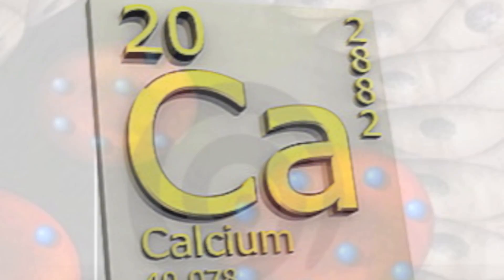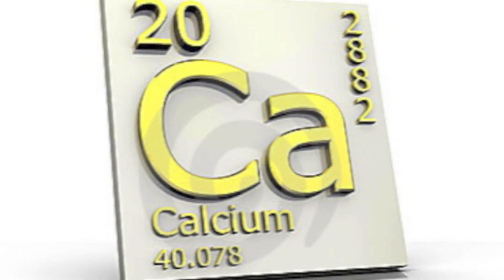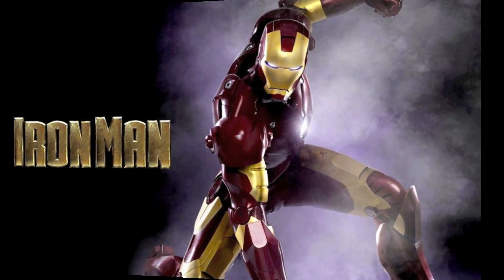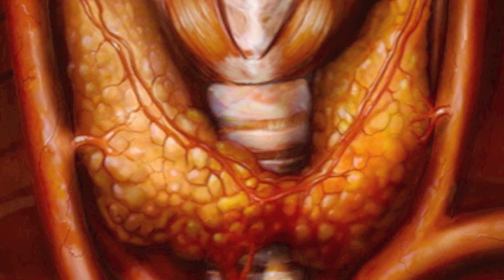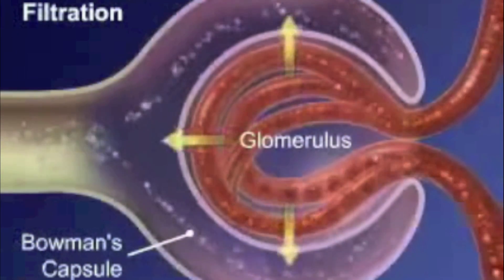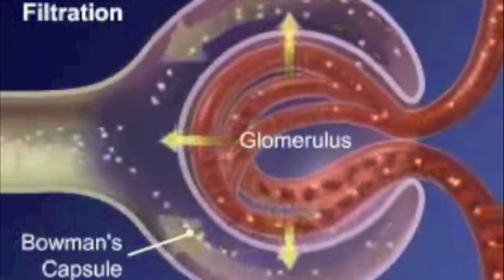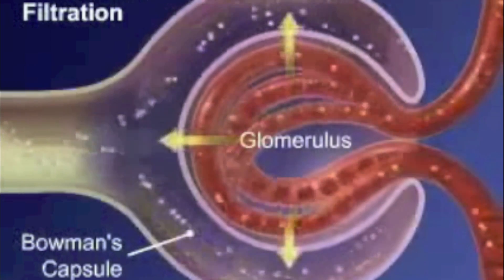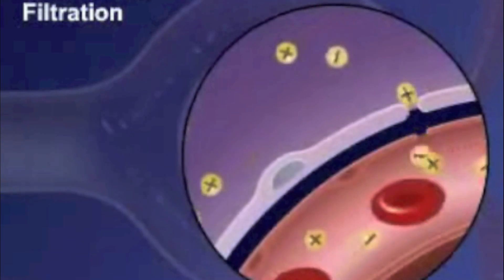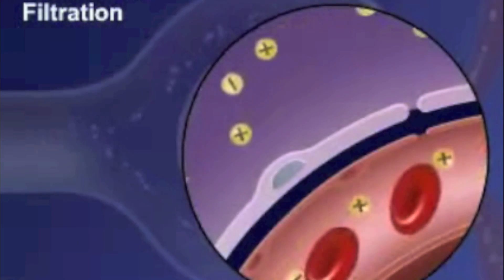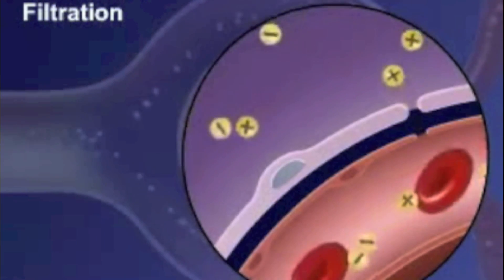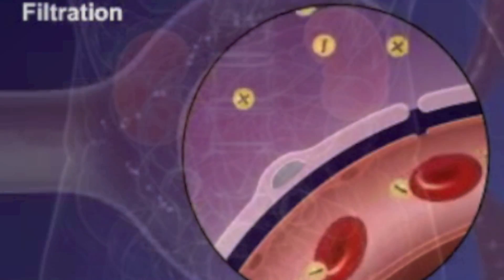Molecules that do not pass through include calcium, iron, and thyroid hormone. As you can see, the blood flowing through the capillaries is under more pressure than the fluid in the capsular space, so blood flows down the concentration gradient. The fenestrae allow small molecules to pass through but prevent larger molecules such as blood cells from being filtered.